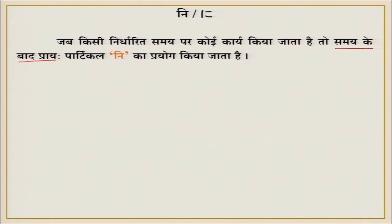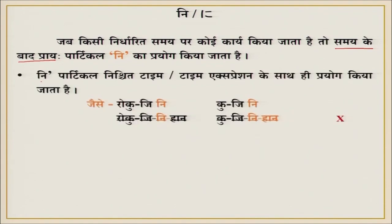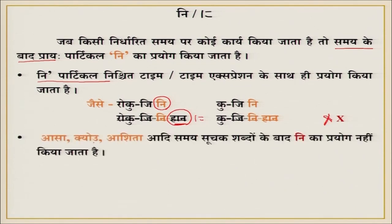Also note that particle ni is used only with specific, definite times. For time expressions like 'asa' (morning), 'kyou' (today), 'ashita' (tomorrow), the particle ni is NOT used — because these are not specific clock times. For example: 'Ashita ni Deli e ikimasu' is incorrect. The correct form is: 'Ashita Deli e ikimasu' — without ni. But 'rokuji ni' is correct because it is a specific time.